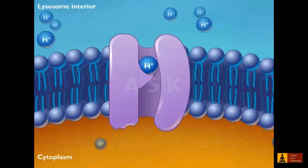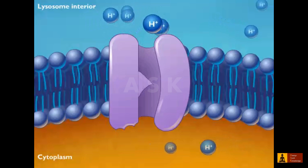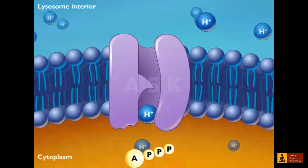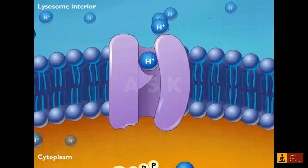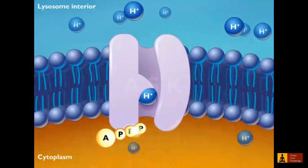Release of the proton on the outside of the cell results in the protein reassuming conformation A, in which the next proton can attach on the inside of the cell and be transported.